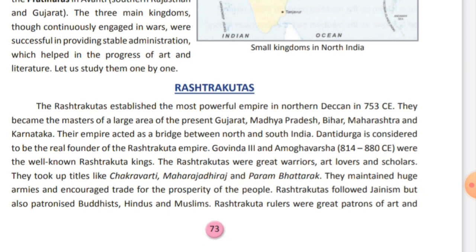Rashtrakutas rulers maintained a huge army and fought battles with the Palas and Pratiharas, overcoming their areas. They encouraged trade for the prosperity of the people. They were tolerant towards other religions — they were followers of Jainism but also supported Buddhists, Hindus, and Muslims. The rock-cut temples of Ellora in Aurangabad district of Maharashtra, belonging to Hinduism, Buddhism, and Jainism, are proof of their religious tolerance.